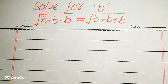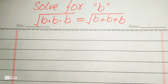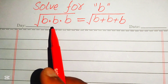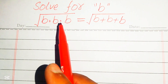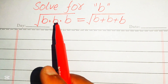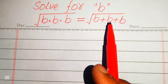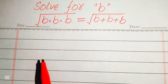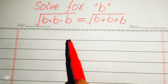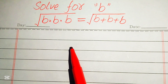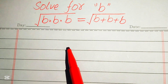Hello everyone, welcome. We will solve this nice algebra problem. We have the square root of b times b times b equals the square root of b plus b plus b. We need to solve this problem for the values of b.